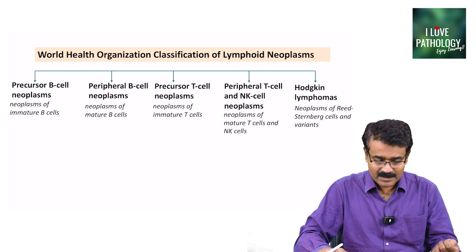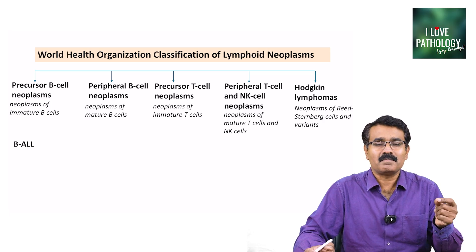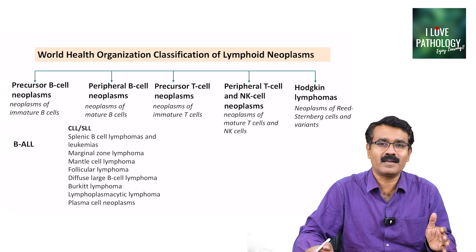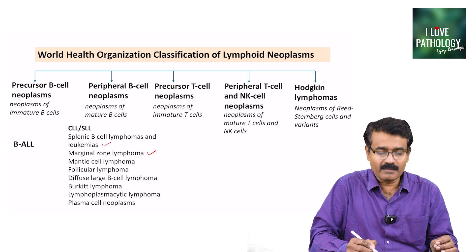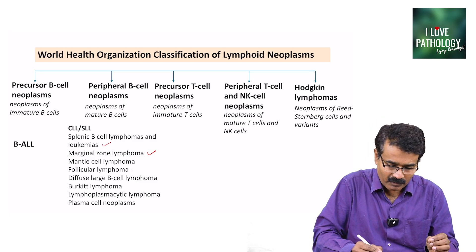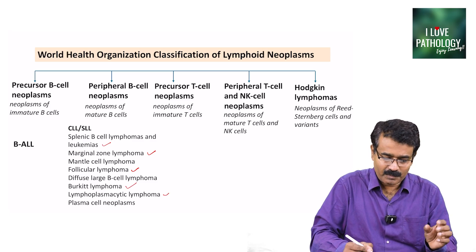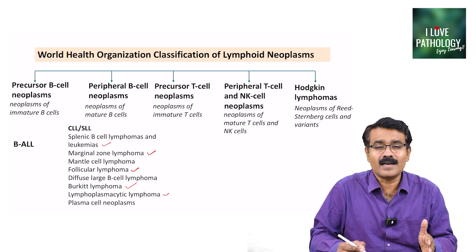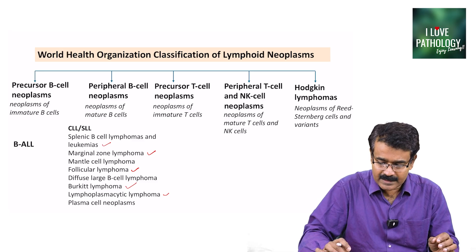Precursor B-cell neoplasms are B-ALL — B-cell type acute lymphoblastic leukemia. Peripheral B-cell neoplasms include chronic lymphocytic leukemia or small lymphocytic lymphoma, splenic B-cell lymphomas and leukemias, marginal B-cell lymphoma, mantle cell lymphoma, follicular lymphoma, diffuse large B-cell lymphoma, Burkitt lymphoma, lymphoplasmacytic lymphoma, and various other plasma cell neoplasms — all of which are mature B-cell neoplasms.